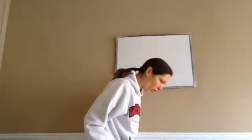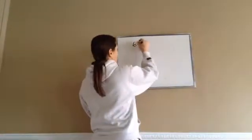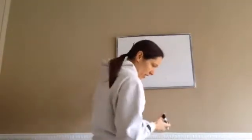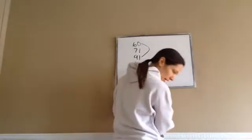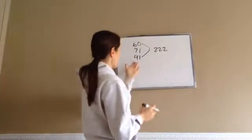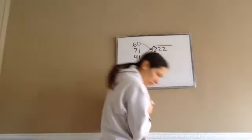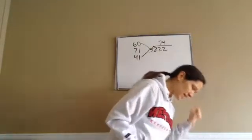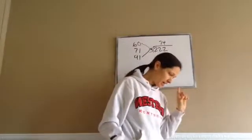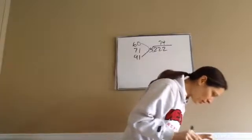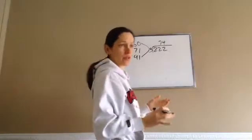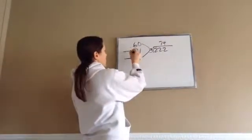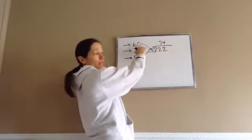Susan's scores improved on each test. Her scores were 60, 71, and 91. The average of her scores: they added up to 222 as your sum. Because we have three scores, we divide that sum by three and end up getting 74 as her average. Now, the teacher did not think this was a fair grade because the third test was the most important — it covered the most material. The second test covered twice as much as the first test.